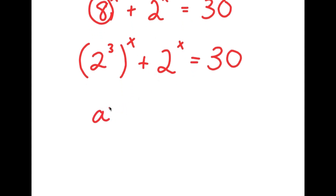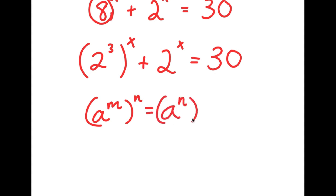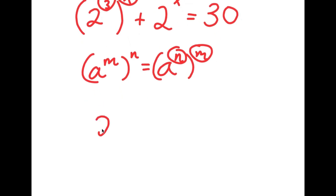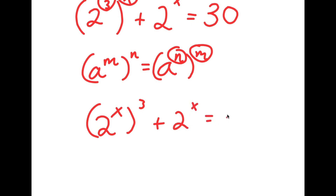If I have something in the form a to the power of m to the power of n, this is the same thing as a to the power of n to the power of m — I can switch the places of n and m. So in this case, I have 2 to the power of 3 to the power of x, and I'm going to switch the places of 3 and x. So I get 2 to the power of x to the power of 3 plus 2 to the power of x is equal to 30.